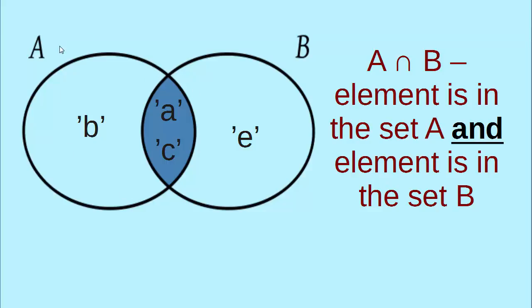First set A with elements A, B and C and second set B with elements A, C and E. A intersect B are common elements for both these sets. So A intersect B gives to us elements that are at the same time in the set A and in the set B.